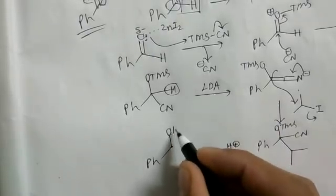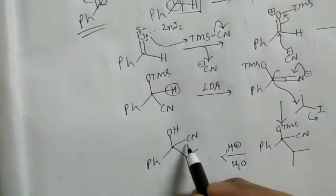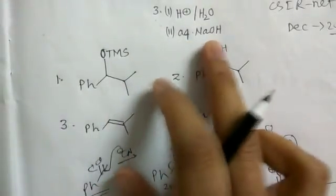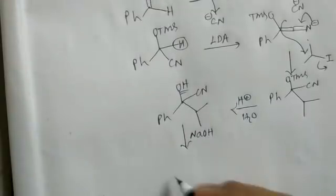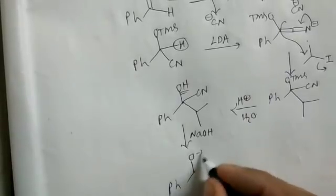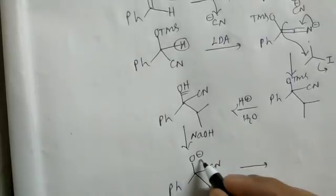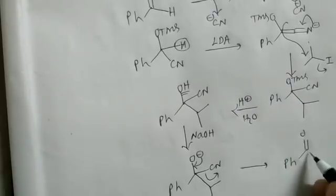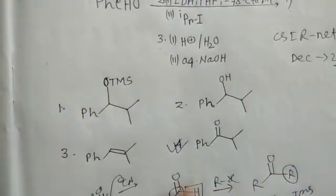The third condition is treatment with H⁺/H₂O, which removes the TMS protection to give a free OH group, with cyanide and the isopropyl group still present. Then treatment with aqueous NaOH deprotonates the OH, and the resulting alkoxide pushes out the cyanide, giving the final ketone product. So option four is the correct answer.